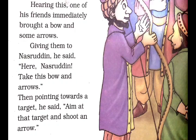Then, his friend said, 'Here, Nasruddin, take this bow and arrows — yeh dhanush aur teer ko lelo. Then, pointing towards a target, he said, aim at that target and shoot an arrow.'